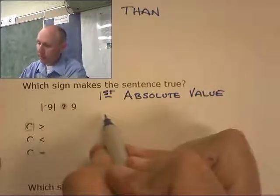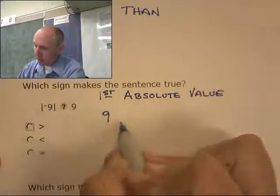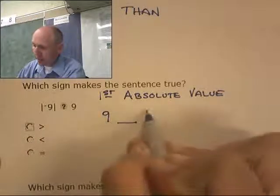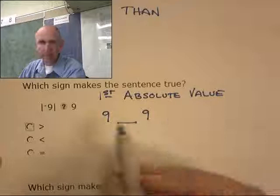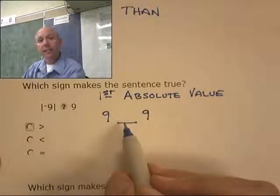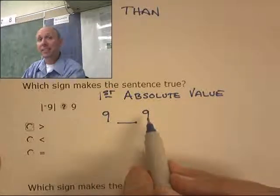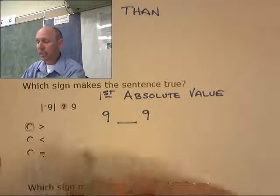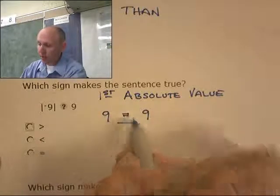What's the absolute value of negative nine? It's nine. So I have 9 something 9. Is nine less than nine? Is nine greater than nine, or is nine equal to nine? They equal each other.